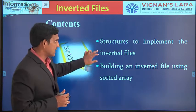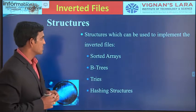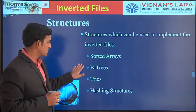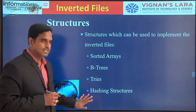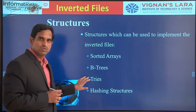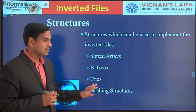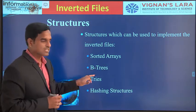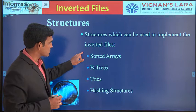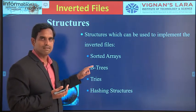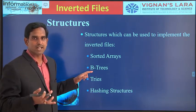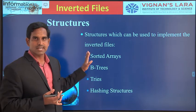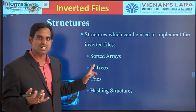In the previous session we started the structures to implement inverted files. We will be using basically four structures: sorted arrays, B-trees, tries, and hashing structures. Hashing structures are not used efficiently, so we will not be covering them here. We will be covering only the first three parts: sorted arrays, B-trees, and tries.